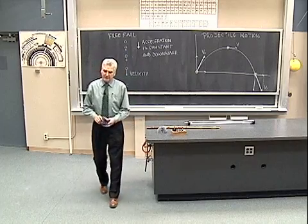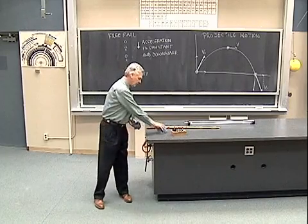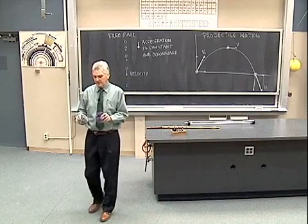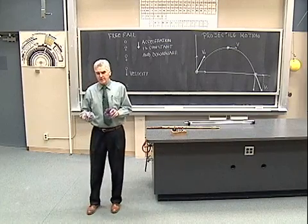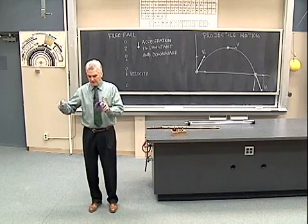Now it turns out that that's true whether the ball is dropped straight down or whether the ball is thrown horizontally. The vertical motion will be the same for the horizontally thrown ball as it will be for the ball that's dropped straight down.